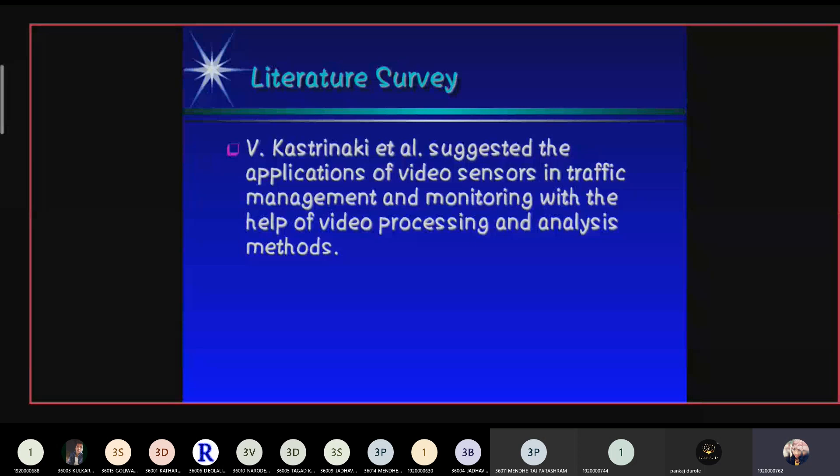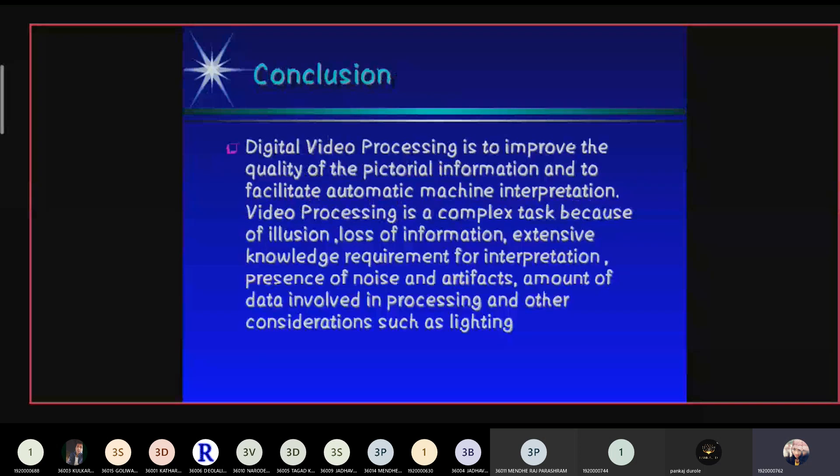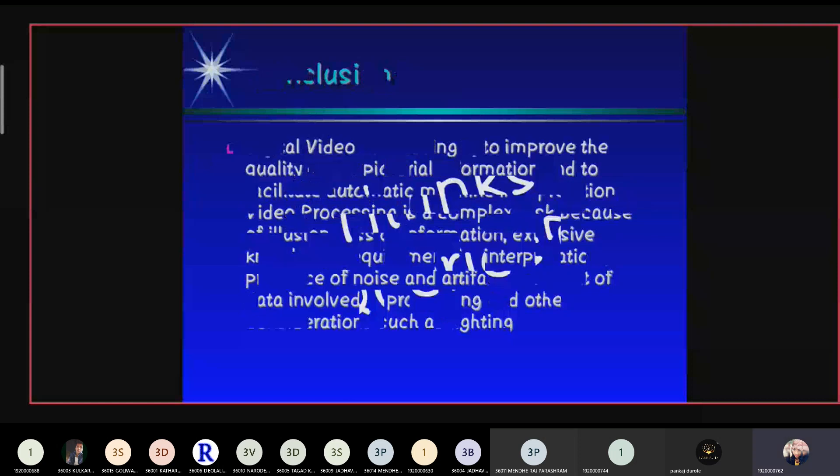Conclusion: Digital video processing is used to improve the quality of the spectral information and to facilitate automatic machine interpretation. Video processing is a complex task because of illusion, loss of information, extensive knowledge requirements for interpretation, presence of noise and artifacts, amount of data involved in processing, and other considerations such as lighting. Thank you.